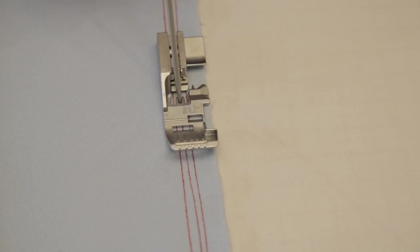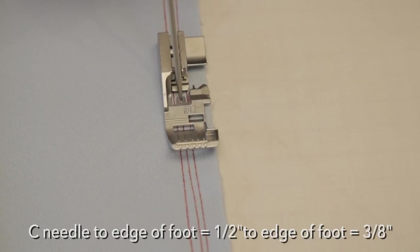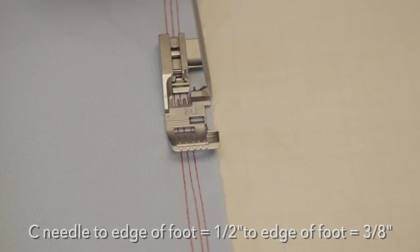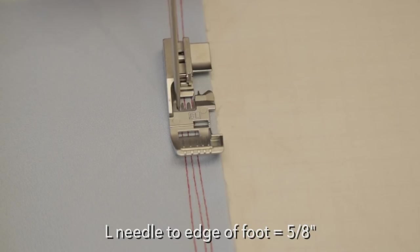When I have my center needle in, from here to the center needle stitching line is a half inch seam allowance. And from the edge right here to the left chain stitch needle, it's a 5/8 inch seam allowance.